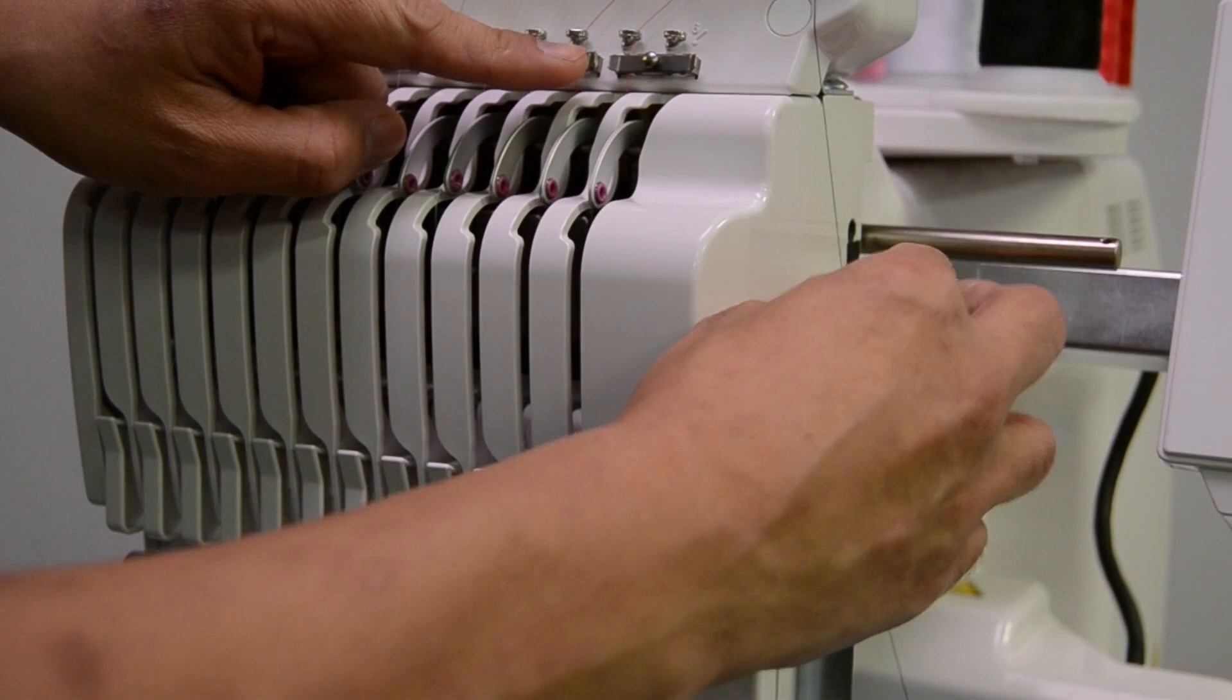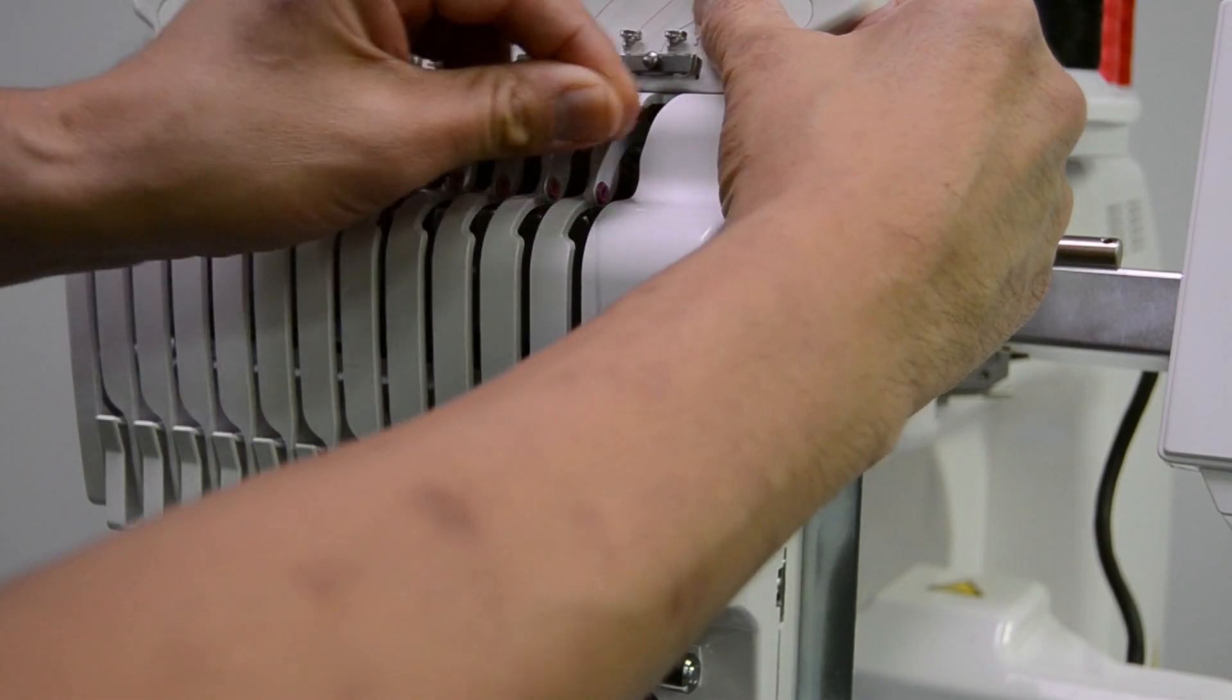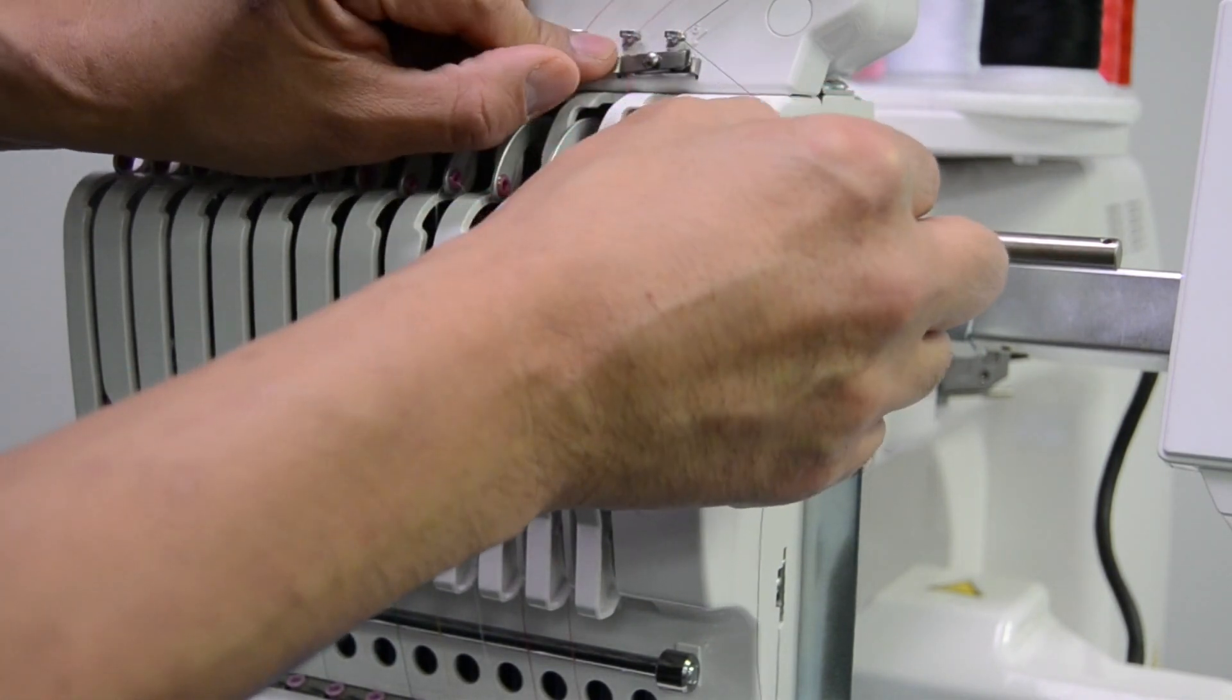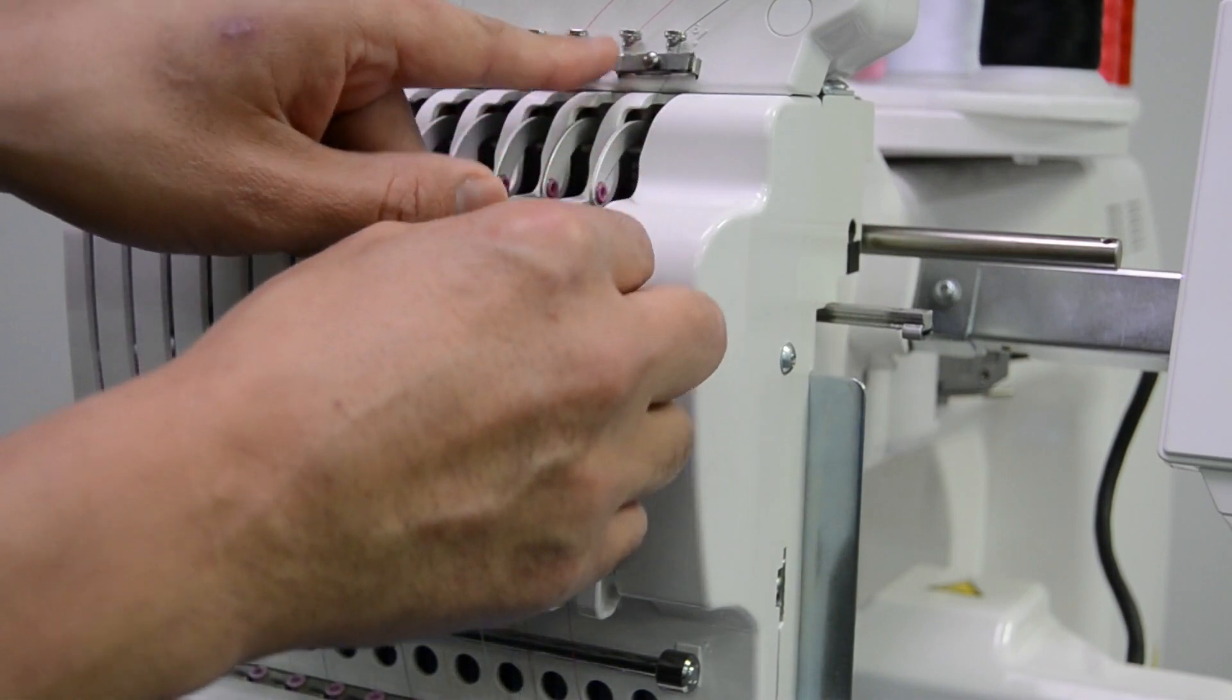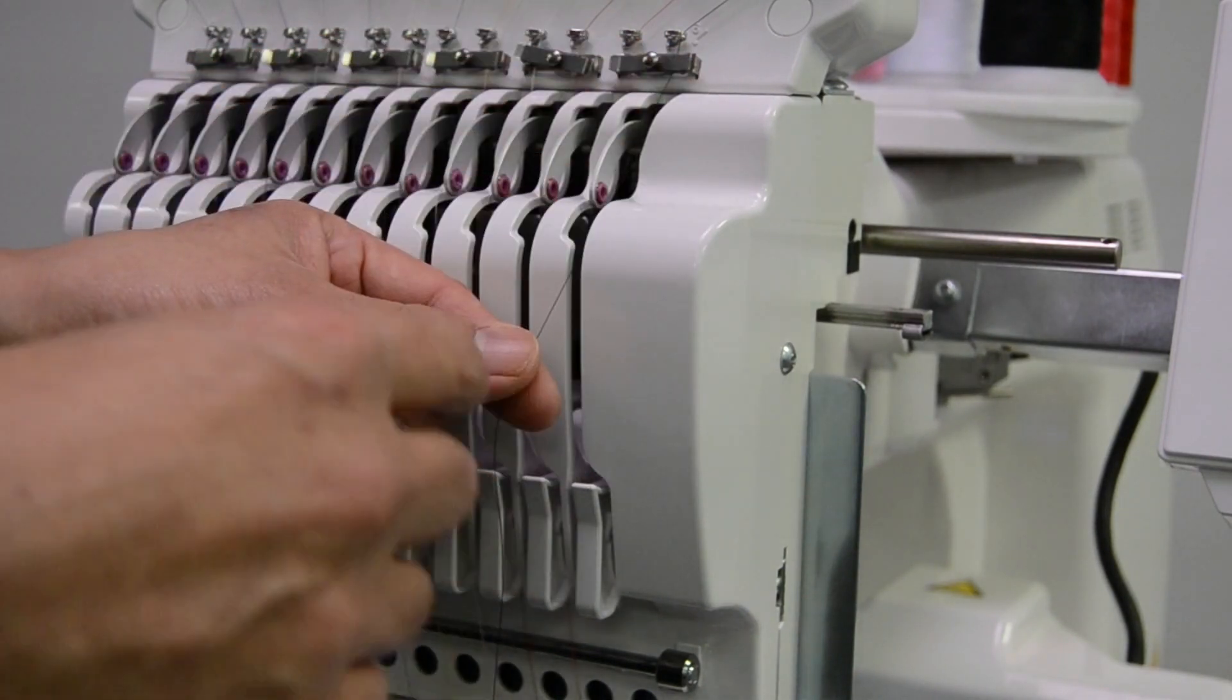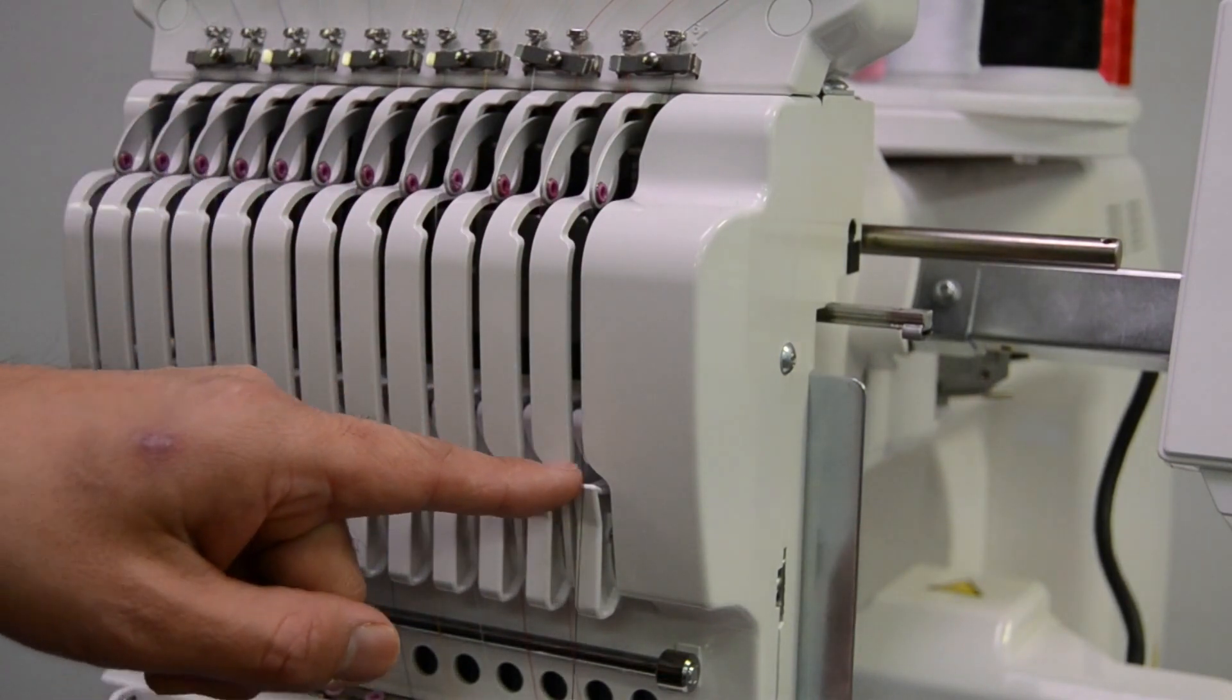Now to run the thread from the lower tensioner to the take-up lever, first catch it in this hook up here and underneath this spring-loaded plate on the appropriate side of the plate. Each plate can accommodate two adjacent threads, so needle one in this case passes on the right side under this plate and then down through the slot to the right of the take-up lever.